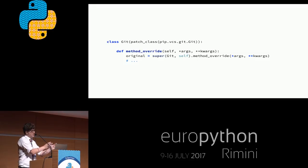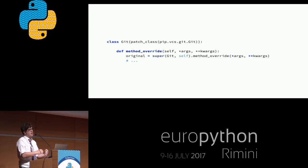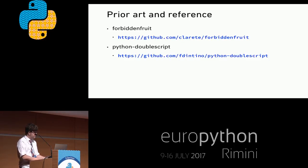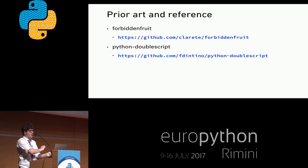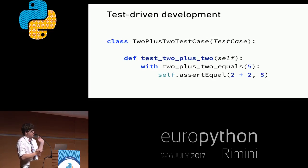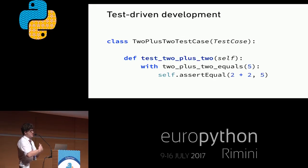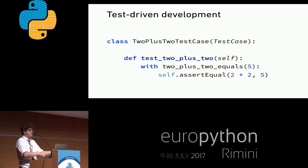I'll structure the talk so it recapitulates the order that I attempted to solve the problem, and along the way explain the different techniques and underlying structures. For prior art, there's a library called Forbidden Fruit that does something similar — it covers the first technique I used to patch integer addition. The full code is in Python Double Scripts at that URL, with running unit tests. So let's do test-driven development. We'll write a test case — probably a context manager is a good idea, because you don't want to set 2 plus 2 to equal 5 across the entire lifespan of the executable. So use a context manager and assert that 2 plus 2 equals 5.